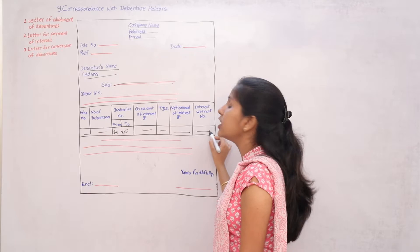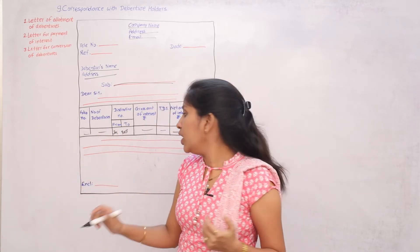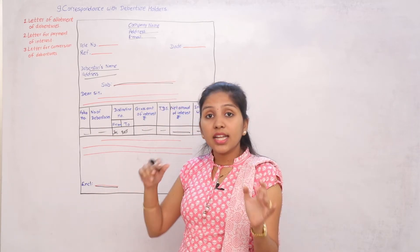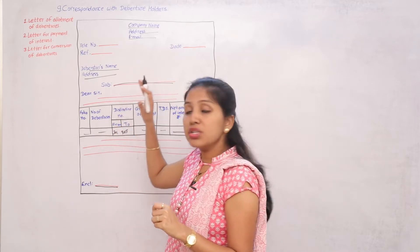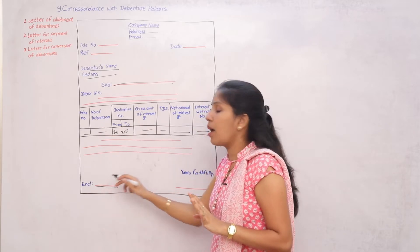And the interest warrant number - the warrant number. And write two to three lines. And how much documents to attach with the letter - all the secretaries mention it. So you can write it here.